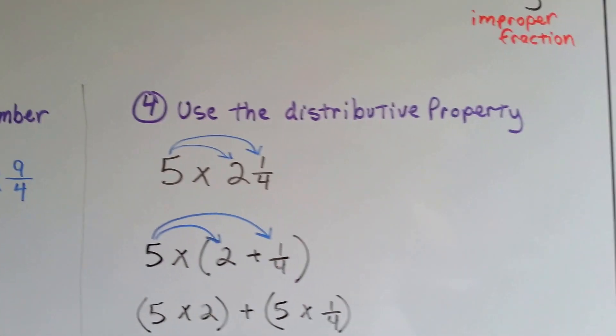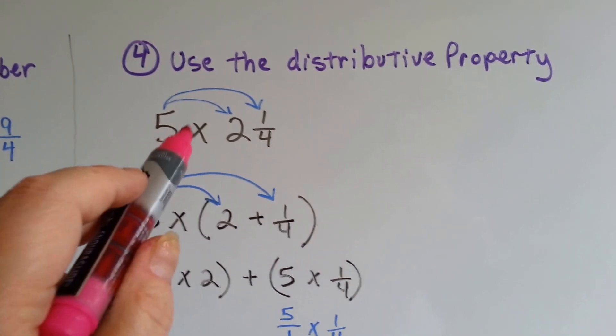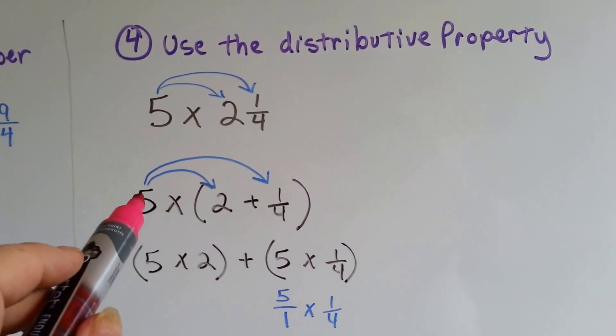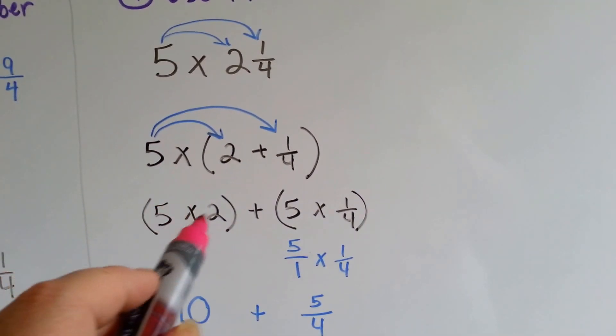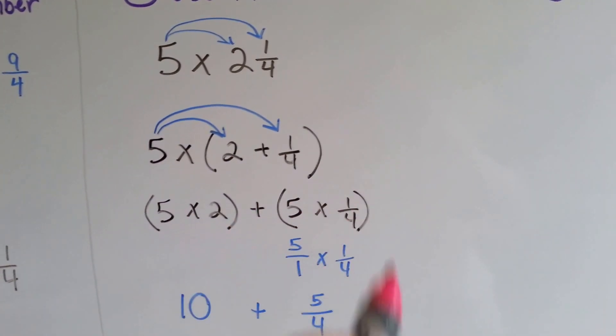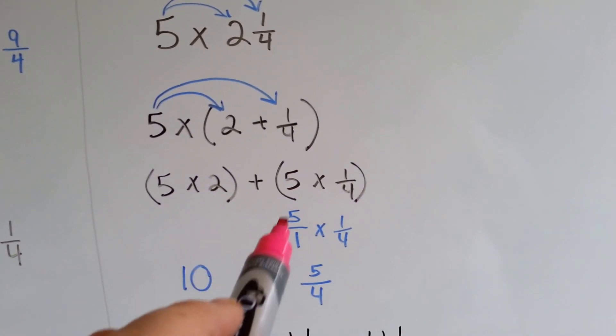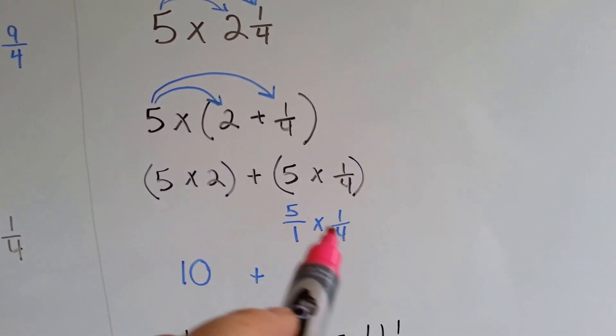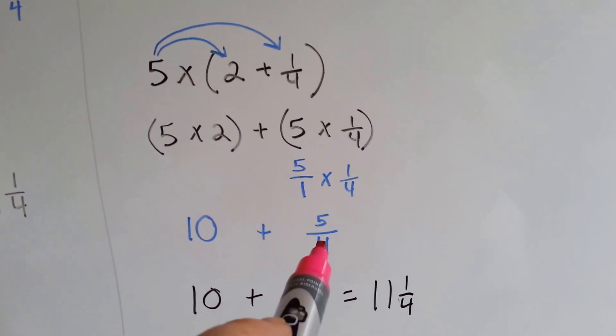We could also use the distributive property. This is our fourth way. If we have 5 times 2 and 1 fourth, we can say 5 times 2 plus 5 times 1 fourth. 5 times 2 is 10. 5 times 1 fourth is 5 over 1 times 1 fourth. 5 times 1 is 5, 1 times 4 is 4, we get 5 fourths.